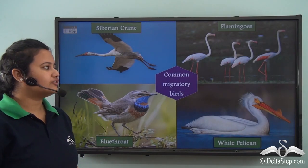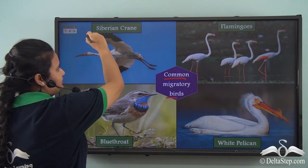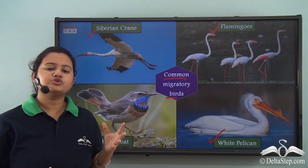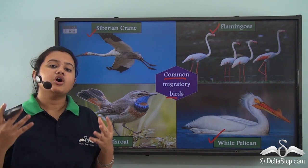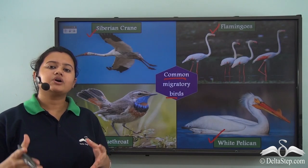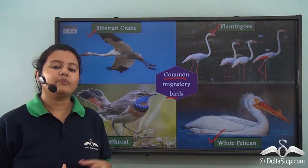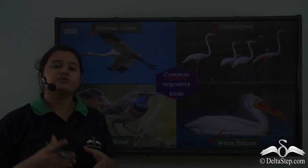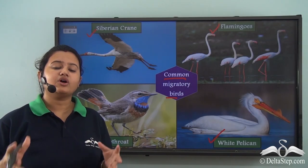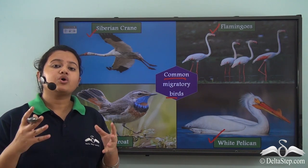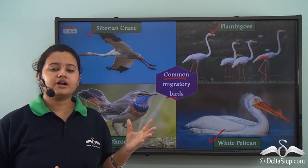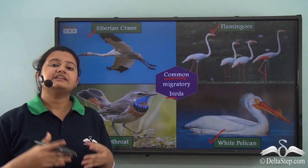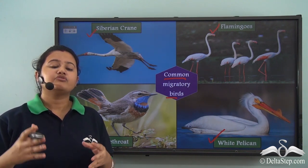Some common migratory birds are the Siberian Crane, Flamingos, Blue Throat, and White Pelican. We usually see these birds for a particular period of the year, especially before the onset of spring season — they are like visitors who come for shorter durations. These birds primarily live in the cold Arctic zone of Tundra regions. Since winter in Tundra regions is extremely long and severe, the birds cannot survive the harsh climate and hence escape to warmer countries in search of food, as the temperature drops below freezing point for most of the year.